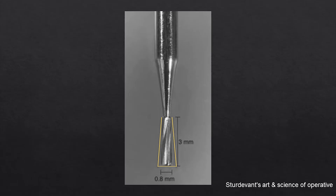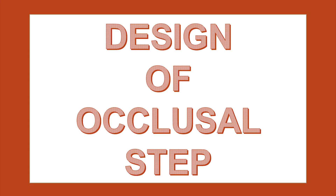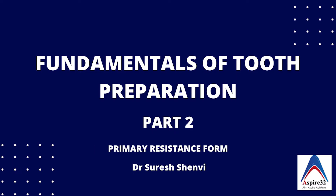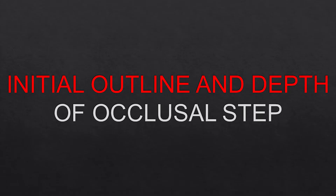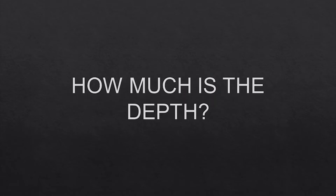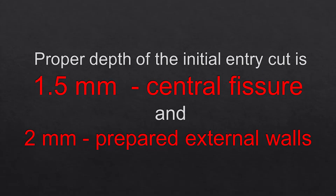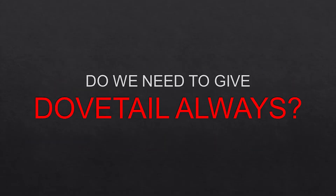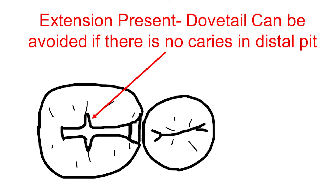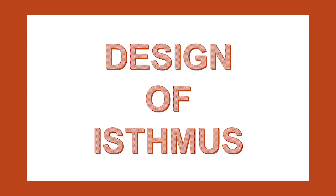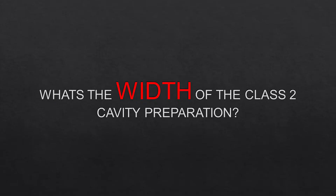The design for the occlusal step is quite similar to the principles applied for any class 1 cavity preparation. I have made a full series on fundamentals of tooth preparation — please go through it. One important point: dovetail is a primary retention feature for class 2 cavity preparation. However, the textbook says that if you have extended your cavity preparation buccally or lingually into the features, then you don't require a dovetail.